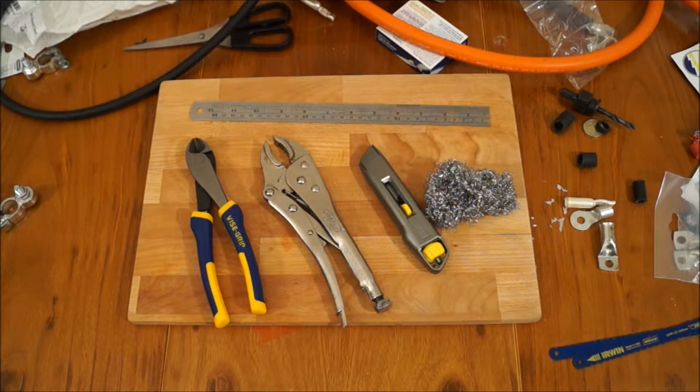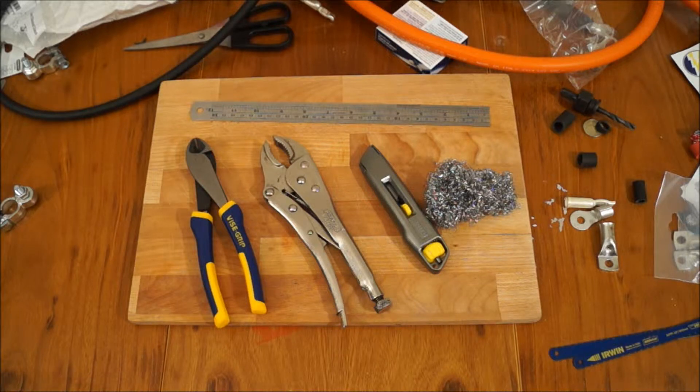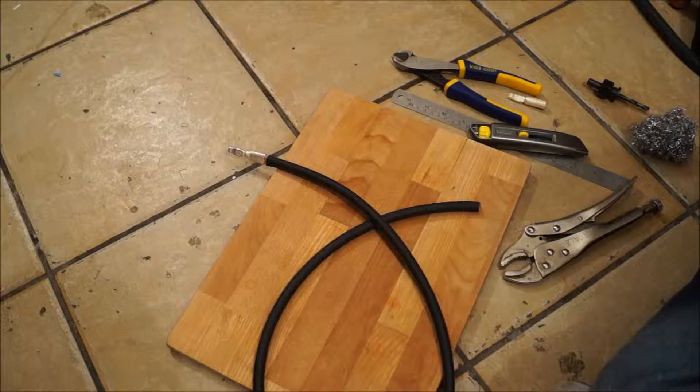Some wire wool to clean the inside of the terminals, and a steel ruler just gives you a rough idea about how much to strip back. But really it's all done by eye, you know, you know roughly how much you need.